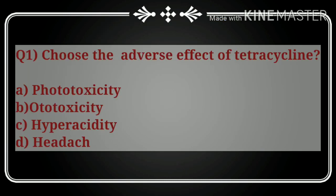Question number one: choose the adverse effect of tetracycline. An adverse effect is a side effect or any toxic effect other than the therapeutic effect — it is an undesired effect. The options are: A) phototoxicity, B) phototoxicity, C) hyperacidity, D) headache. The correct answer is option A, phototoxicity. Phototoxicity is the correct adverse effect of tetracycline.